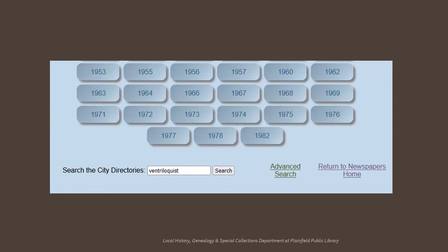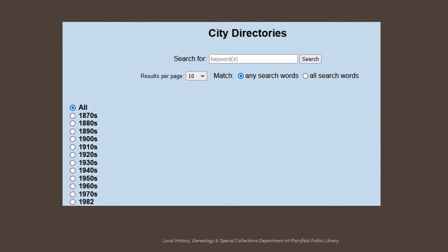At the bottom of that same page is an option to search all of the directories at the same time. Rather than searching for a particular person's name, I've entered an occupation that I thought might be fun to use in the promotional graphic for this webinar. That search was unsuccessful, as it seems that no professional ventriloquists ever identified themselves in the Plainfield directories. Let's click now on Advanced Search — it gives us some additional options in how we search. Had my search been for a more popularly found occupation, like a carpenter or a cook, it would be smarter to break down the search by decade or individual year, rather than try to search all the volumes at the same time.